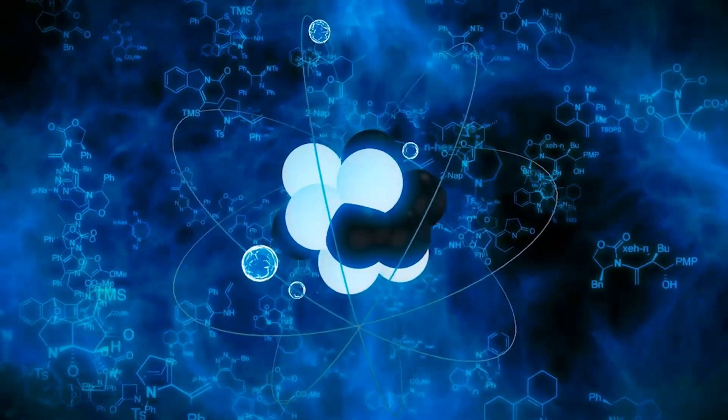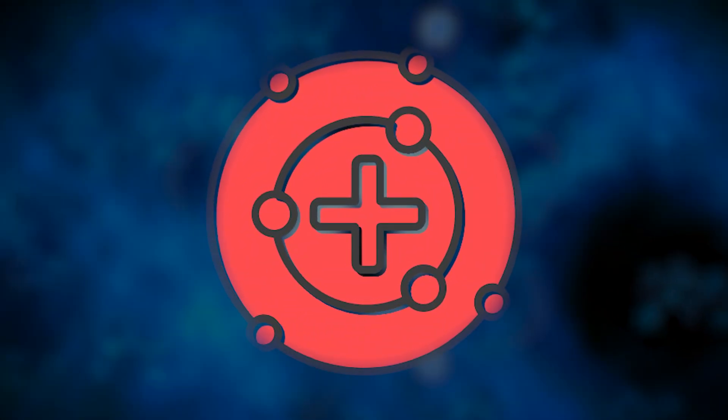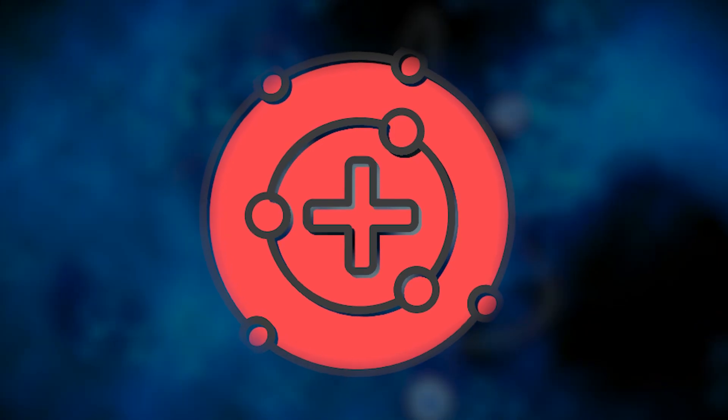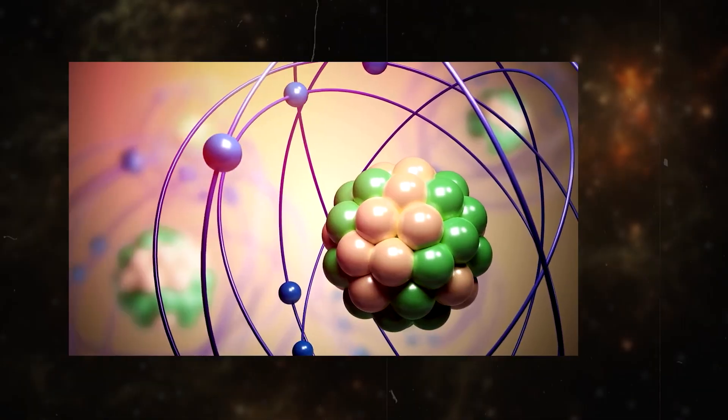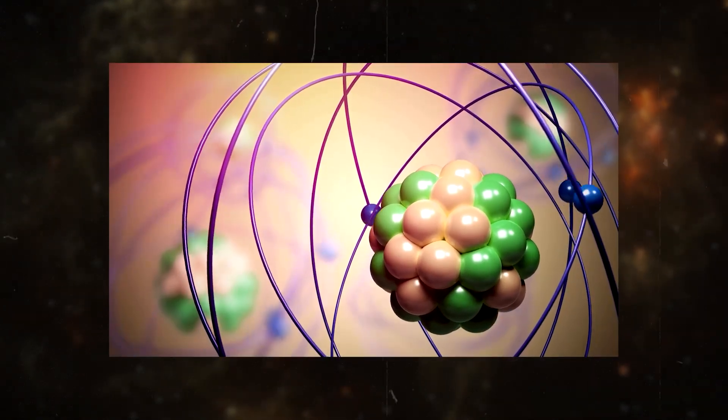To create antimatter, scientists start with a proton, a positively charged subatomic particle found in the nucleus of an atom. Protons are abundant in nature, making them an ideal starting point for antimatter production.